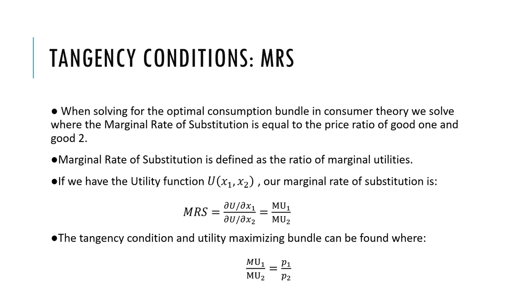When solving for the optimal consumption bundle in consumer theory, we solve where the marginal rate of substitution equals the price ratio of good one and good two. The marginal rate of substitution is defined as the ratio of marginal utilities: if we have utility function u(X1, X2), the MRS equals the partial derivative with respect to X1 over the partial derivative with respect to X2. The tangency condition is found where MU1 over MU2 equals P1 over P2.